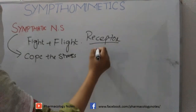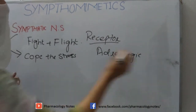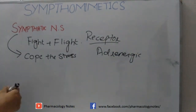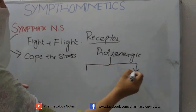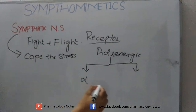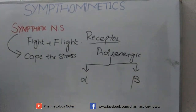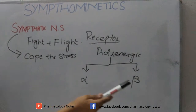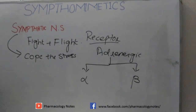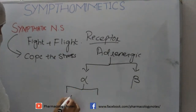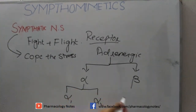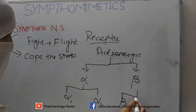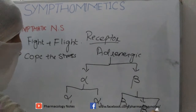Those receptors which are in the sympathetic nervous system are termed as adrenergic receptors. Adrenergic receptors are of two types: they are classified as alpha receptors and beta receptors. Alpha receptors are further categorized as alpha-1 and alpha-2, while beta receptors are divided into beta-1, beta-2, and beta-3.